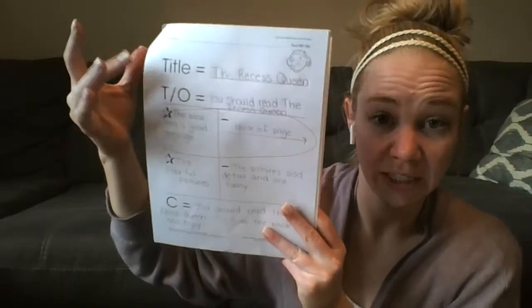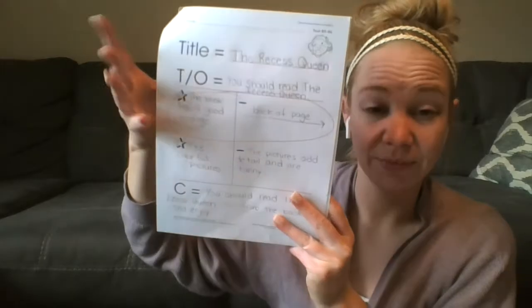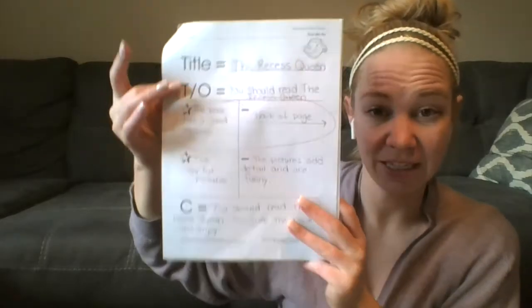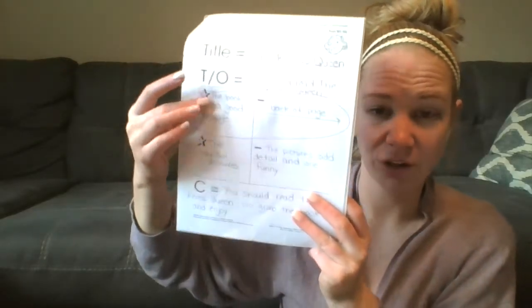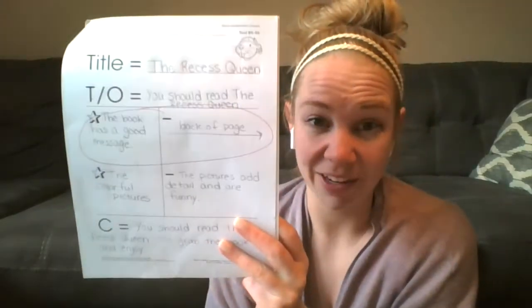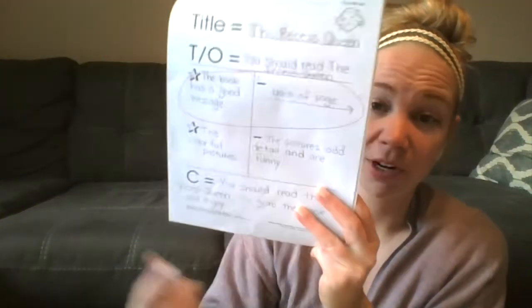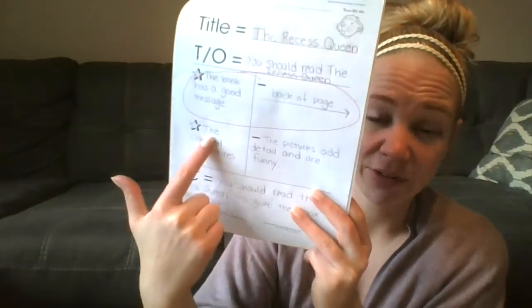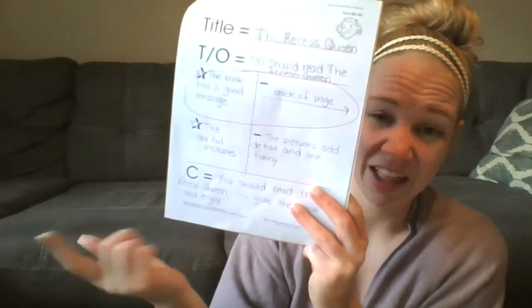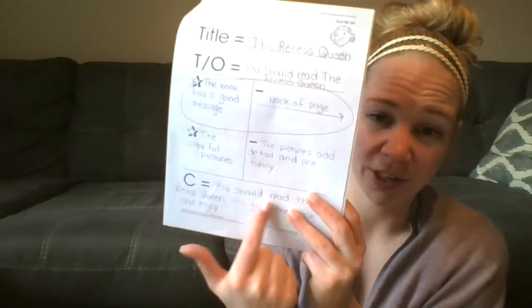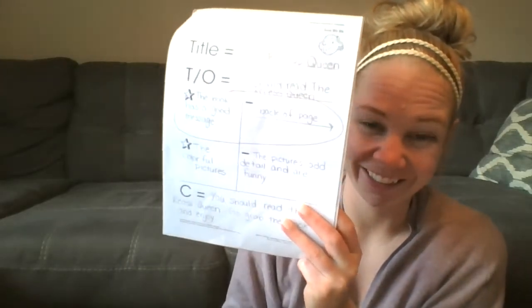Yesterday, we wrote the title, the topic sentence, and opinion, our first reason, and detail. Today, we're going to write our second reason, the detail, and finish with our conclusion.